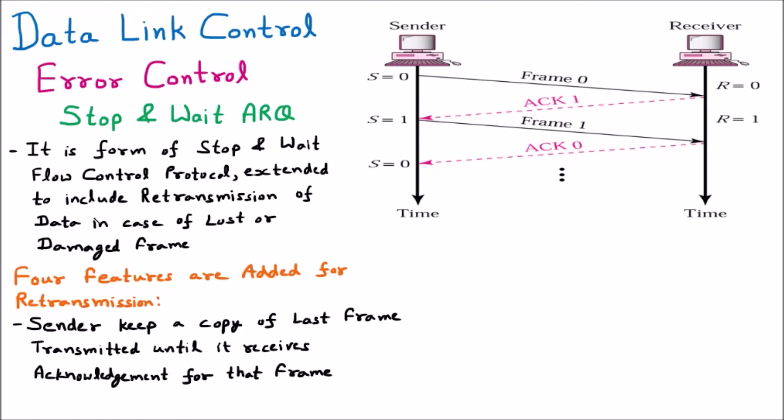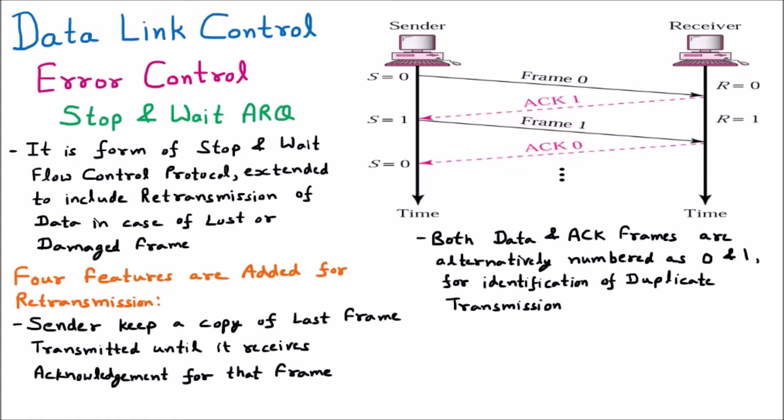The second feature is that both data and acknowledgement frames are alternately numbered with 0 and 1 for the identification of duplicate transmissions. The data and acknowledgement frames are consecutively 0, 1, 0, 1, so that whenever a duplicate is sent, it can be easily caught — if we send frame 1 and transmit frame 1 again, we can identify it as the previous frame, not a new one.